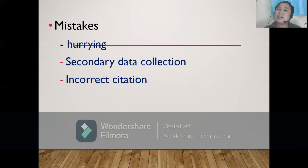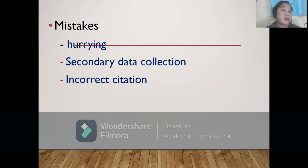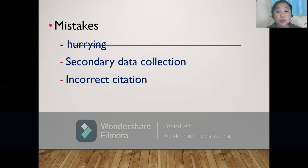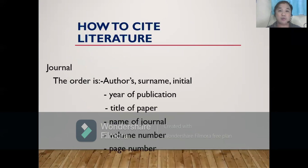What are the mistakes in making your Chapter 2? Many students do these. Number one, they are in a hurry — that is a mistake. Second, secondary data collection. Third, incorrect citation.